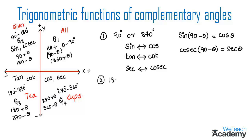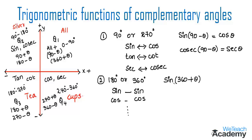Second, for angles involving 180 degrees or 360 degrees — even numbers — the trigonometric ratios remain the same: sin stays sin, cos stays cos, tan stays tan, and so on. For example, sin 360 degrees plus theta lies in quadrant 1 where all ratios are positive, and 360 is even, so the result is sin theta. For sin 180 plus theta, it lies in quadrant 3 where sin is negative, and 180 is even so sin remains sin — result is minus sin theta.